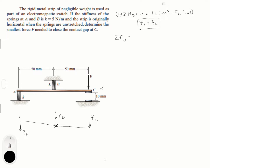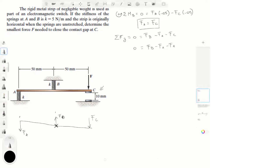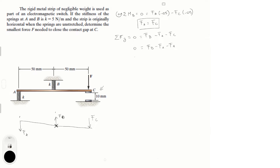If you sum the forces in the Y-direction and set it equal to zero, you get FB minus FA minus FC equals zero. But since FA and FC are the same, that gives FB minus FA minus FA equals zero, meaning FB is twice as big as FA. So the B spring is stretched more than the A spring.